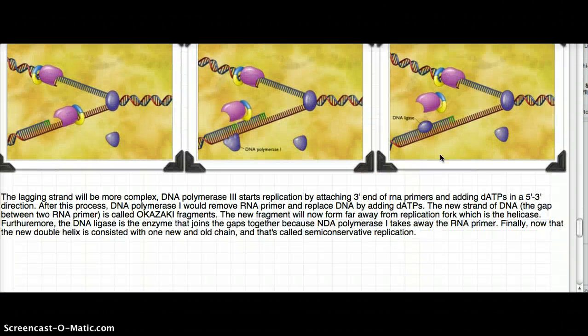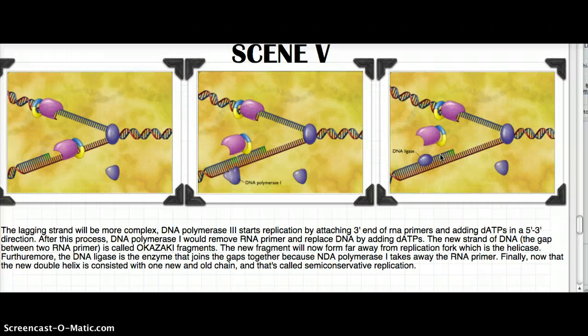For the lagging strand, it will be more complex. DNA polymerase III starts to replicate, as I explained earlier, by attaching to the 3 end of RNA primers and adding dATPs in a 5 to 3 direction. After this process, DNA polymerase I will remove the RNA primer and replace it with DNA by adding dATPs.